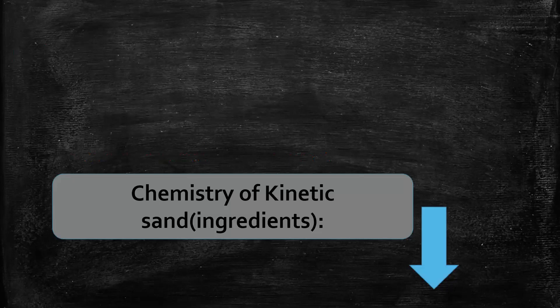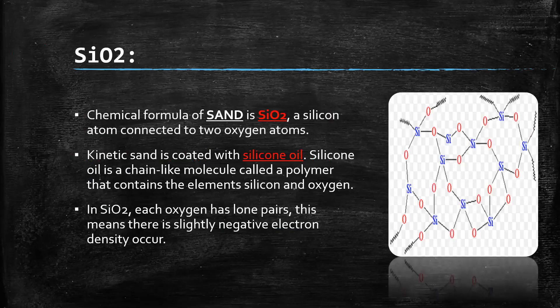Next is the chemistry of kinetic sand ingredients. Here we discuss the ingredients used in kinetic sand and their chemistry. The first ingredient is sand. The chemical formula of sand is SiO₂ — a silicon atom connected with two oxygen atoms. Kinetic sand is coated with silicon oil, which is a chain-like molecule — a polymethyl polymer containing carbon, silicon, and oxygen. Inside, each oxygen carries a partial negative charge, meaning a slightly negative electron distribution is occurring.